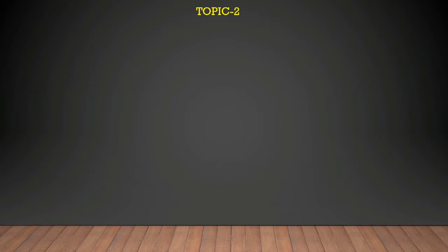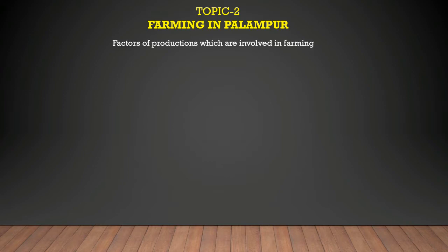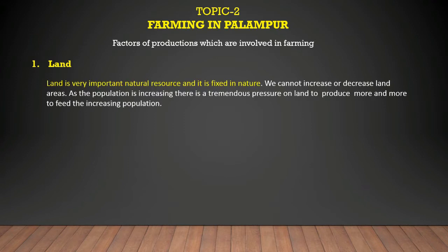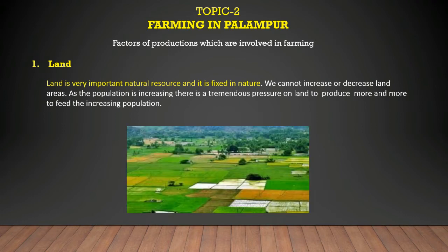Farming in Palampur. In this topic we are going to discuss the factors of production involved in farming. Number one is land. Land is a very important natural resource and it is fixed in nature, meaning we cannot increase or decrease the land area. As the population is increasing, there is tremendous pressure on land to produce more and more to feed the increasing population.